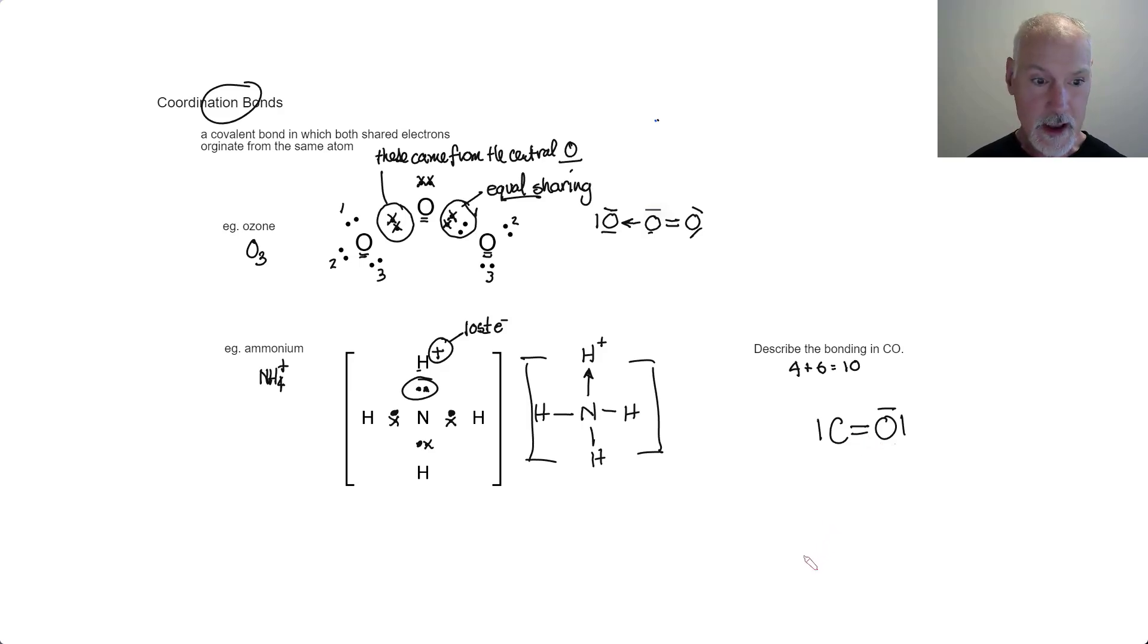So I'm going to take that pair and move it in. It improves the situation for carbon, but it only has six while the oxygen still has eight. So let's move a second pair in. So the first thing I can notice is that we have something that has a triple bond.